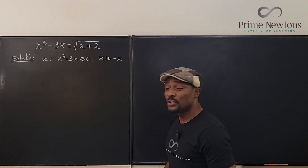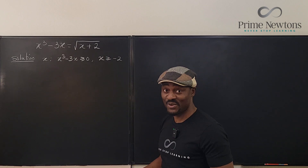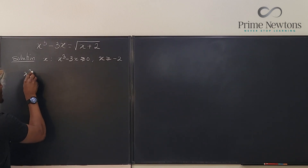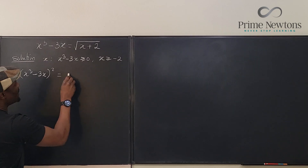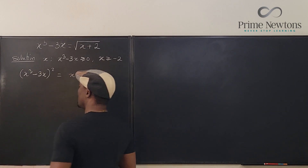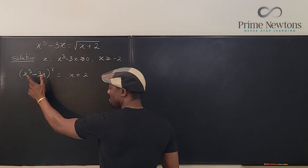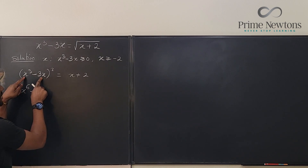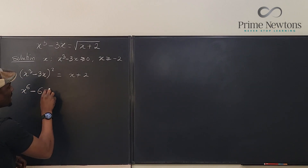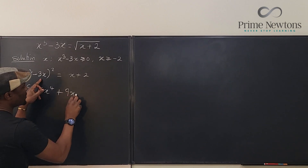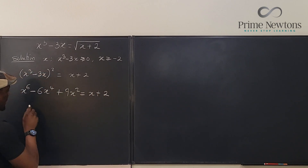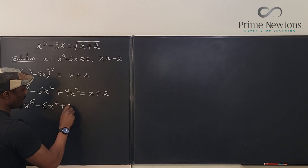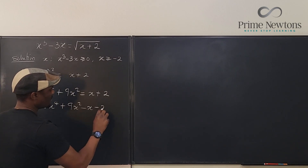Now what do you do first? Obviously there's a square root sign, so you want to square both sides. I don't have any other strategy — I told you it's going to be brute force. So we're going to square both sides. We have x cubed minus 3x, all squared, will be equal to x plus 2. If we foil this out — we square any binomial — it's going to be the square of the first, which is x to the sixth, minus 6x to the fourth, plus 9x squared, equals x plus 2. And then if we have everything together: x to the sixth minus 6x to the fourth plus 9x squared minus x minus 2 is equal to 0.